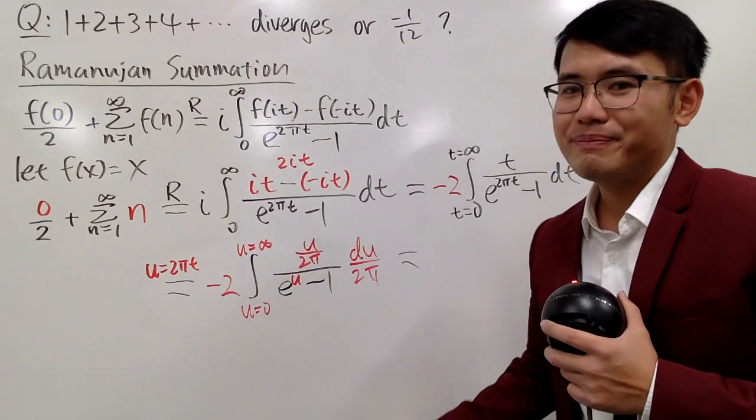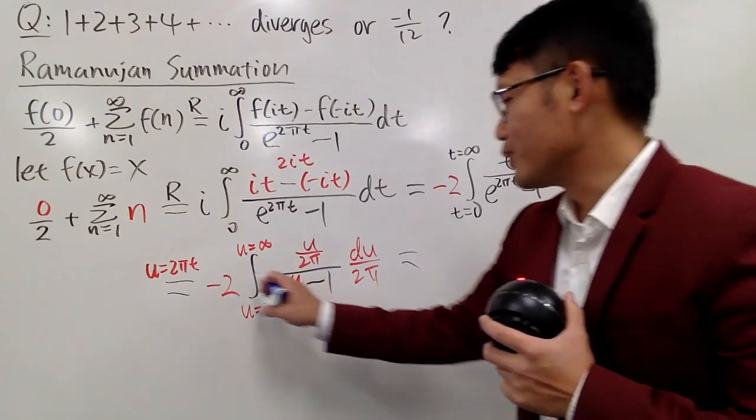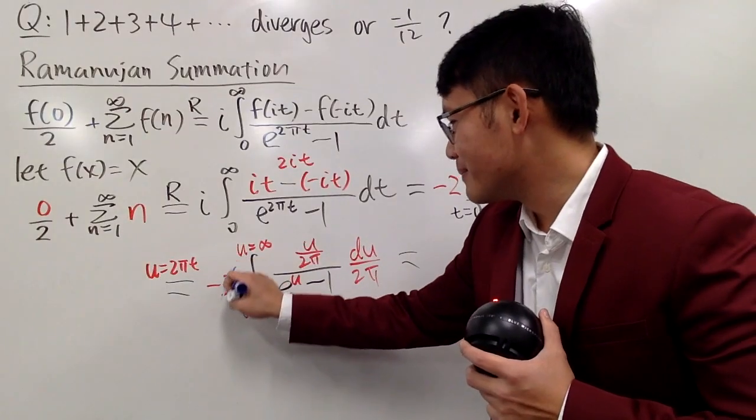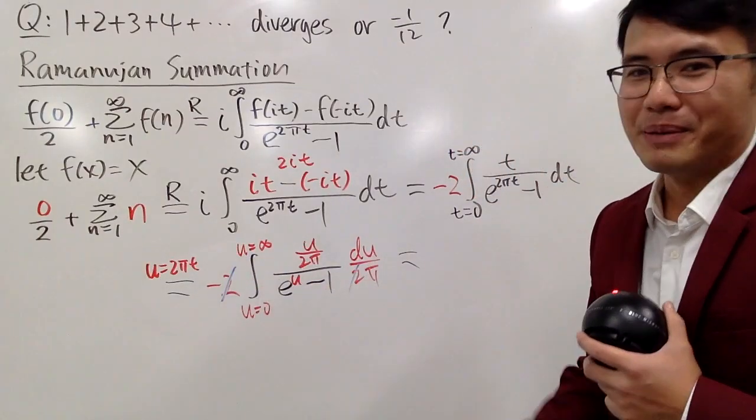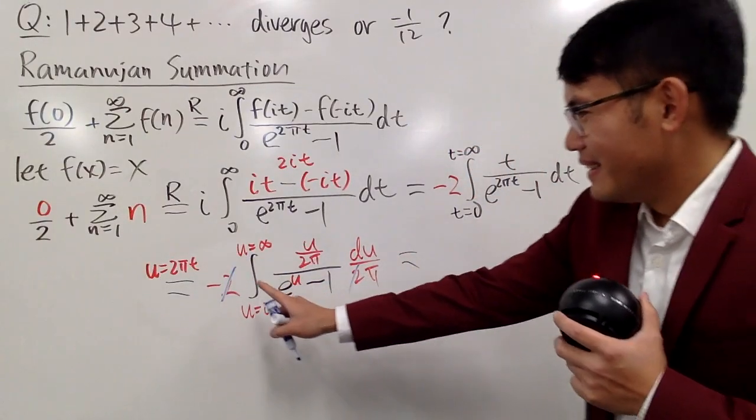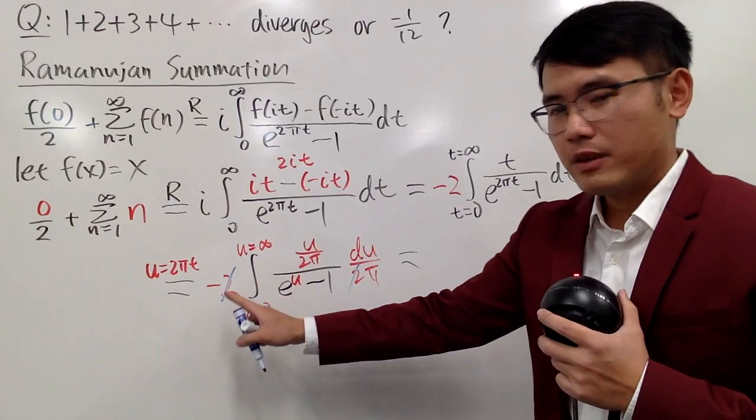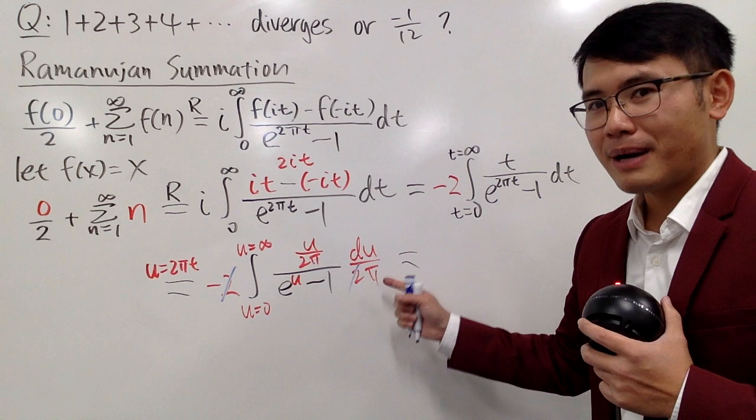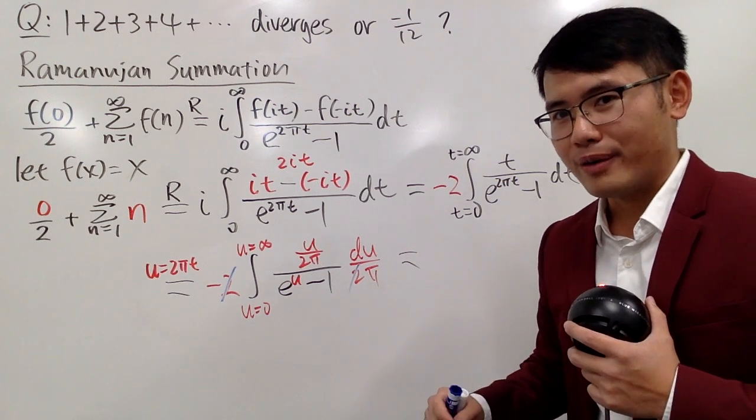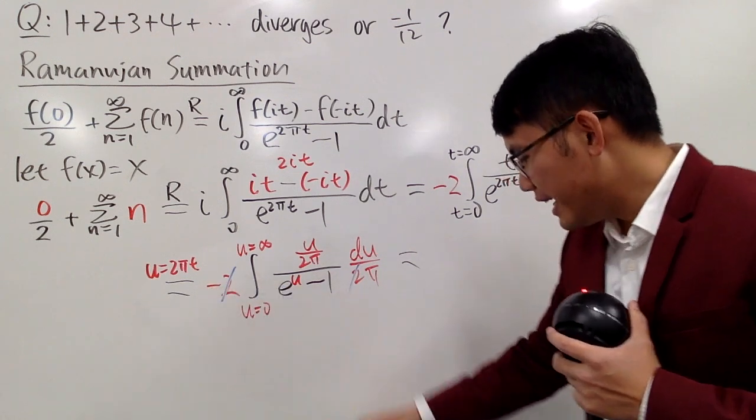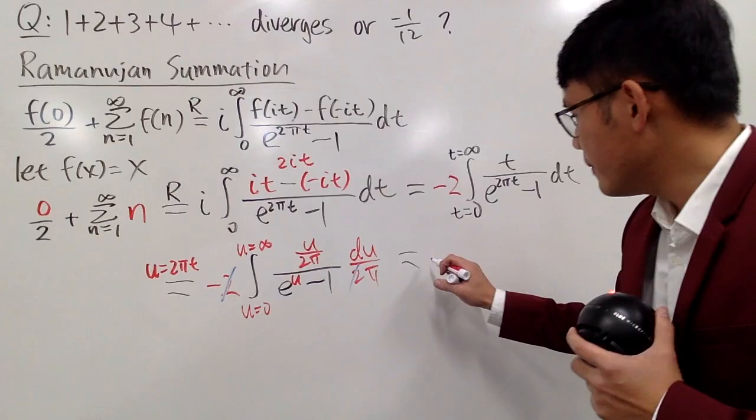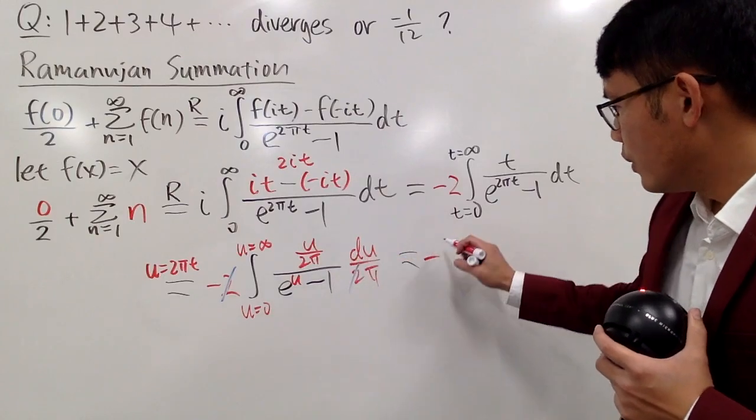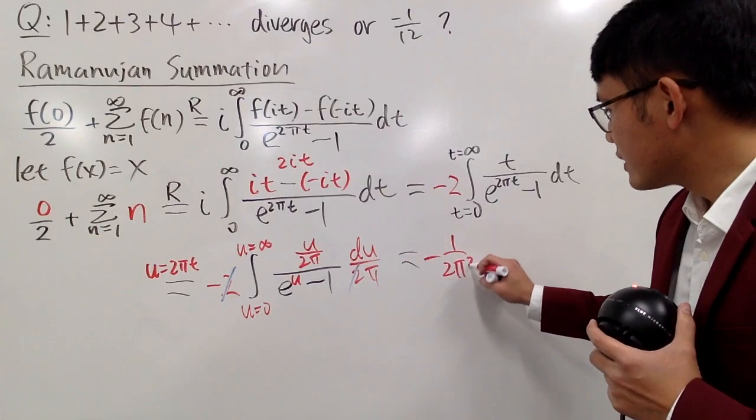And now, we can actually cancel things out, just the 2, this and that, 2 and this 2. This 2 and the pi, they are in the denominator, so is this pi, so we have pi times pi in the denominator, we have pi squared. So, altogether, we have negative 1 over 2 pi squared.